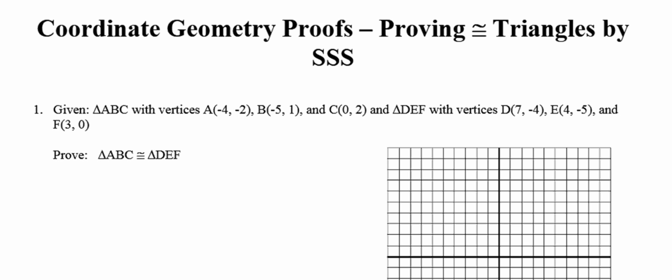I'm on page 28 in your notes packet and the topic of this video is to use coordinate geometry to prove triangles congruent. Given triangle ABC with vertices A(-4, -2), B(-5, 1), and C(0, 2), and triangle DEF with vertices D(7, -4), E(4, -5), and F(3, 0), we need to prove that these two triangles are congruent to each other.